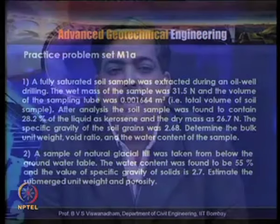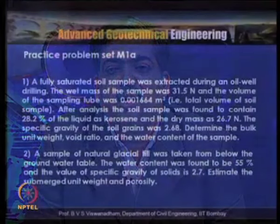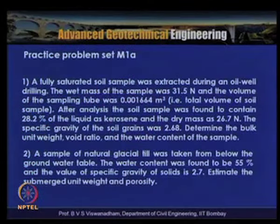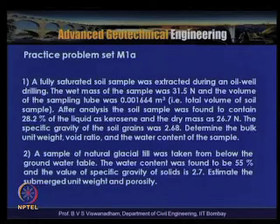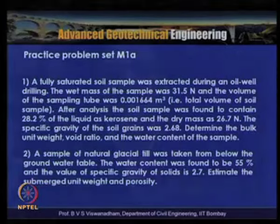In the second problem, a sample of natural glacial till was taken from below the ground water table. The water content was found to be 55% and the specific gravity of the soil is 2.7. Estimate the submerged unit weight and porosity. The submerged unit weight is γ_sat − γw, where γ_sat is the saturated unit weight and γw is the unit weight of water.